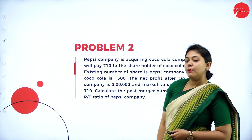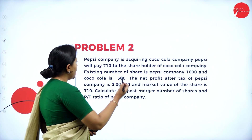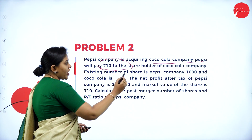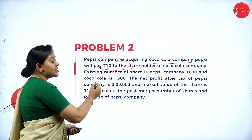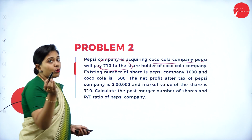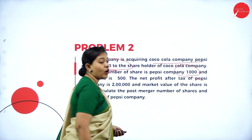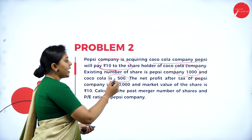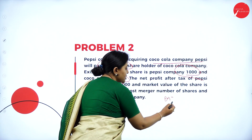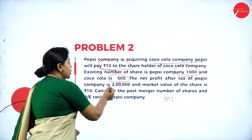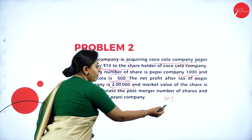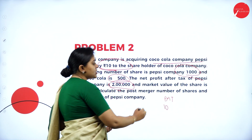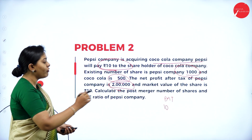Moving forward — problem number 2. Pepsi company is acquiring Coca-Cola company. Pepsi will pay rupees 10 to the shareholders of Coca-Cola company. Existing number of shares with Pepsi company is 1,000 shares, and Coca-Cola has 500 shares. The net profit after tax of Pepsi company is 2 lakh, and the market value of share is 10 rupees each. Calculate the post-merger number of shares and the PE ratio of Pepsi company.